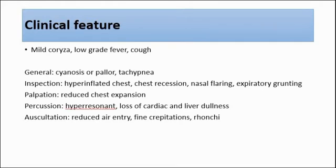For palpation, there will be reduced chest expansion in bronchiolitis. On percussion, it will be hyperresonant, and there will be loss of cardiac and liver dullness as the lung is hyperinflated. Whereas for auscultation, there will be reduced air entry, and fine crepitations and ronchi may be heard. This helps to differentiate from pneumonia as well, because in pneumonia, the typical presentation is coarse crepitations.